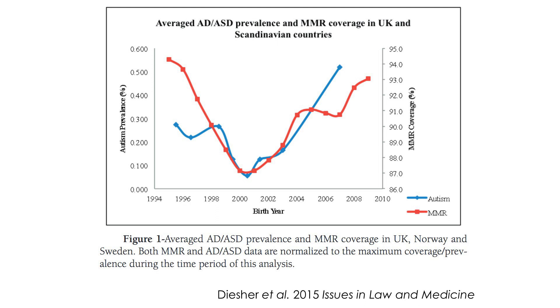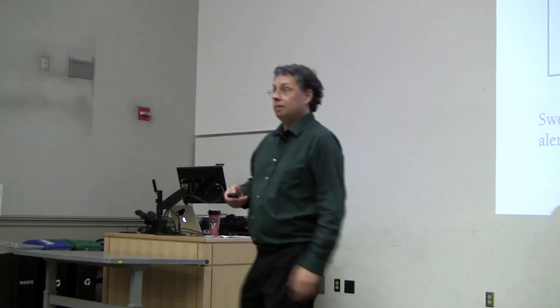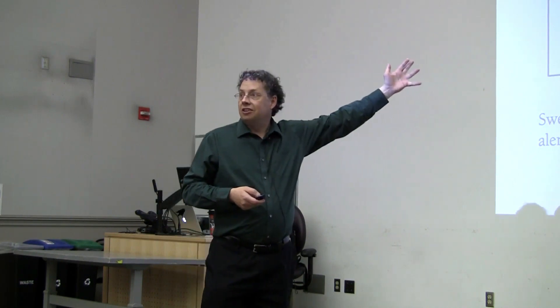Until you notice that these axes are completely different. This one goes from 0 to 0.6%, while this one starts at 86% and goes up to 95% — so these fluctuations in MMR coverage are very minor. Here's a more reasonable graph with two different axes where we include zero on both sides. What we see is very small fluctuations in MMR coverage and many-fold changes in autism prevalence over this period, if anything indicating these are unlikely to be causally connected, rather than the misleading impression you get from the truncation.